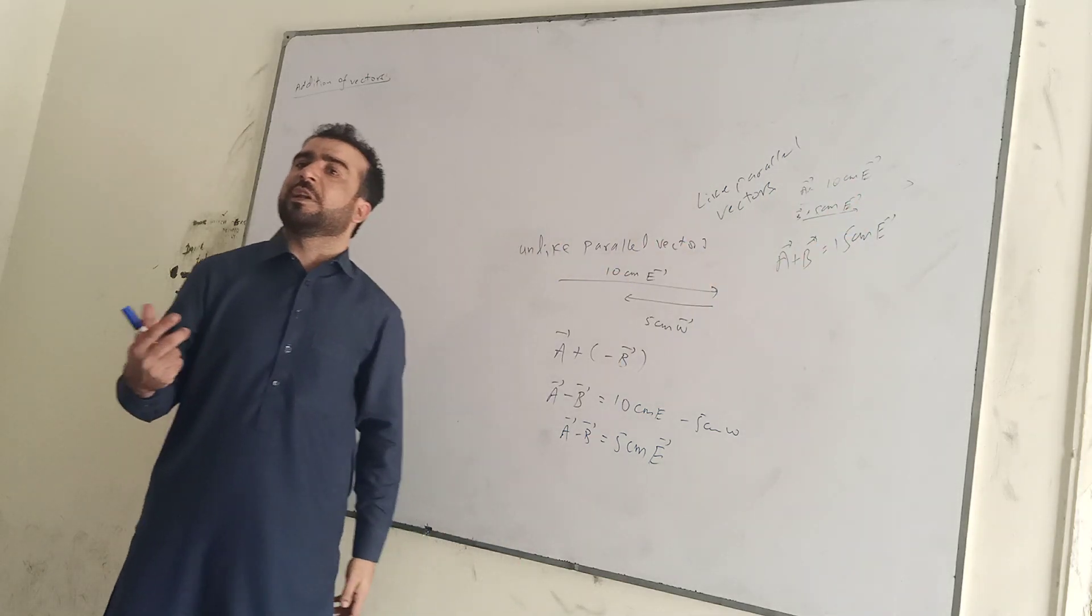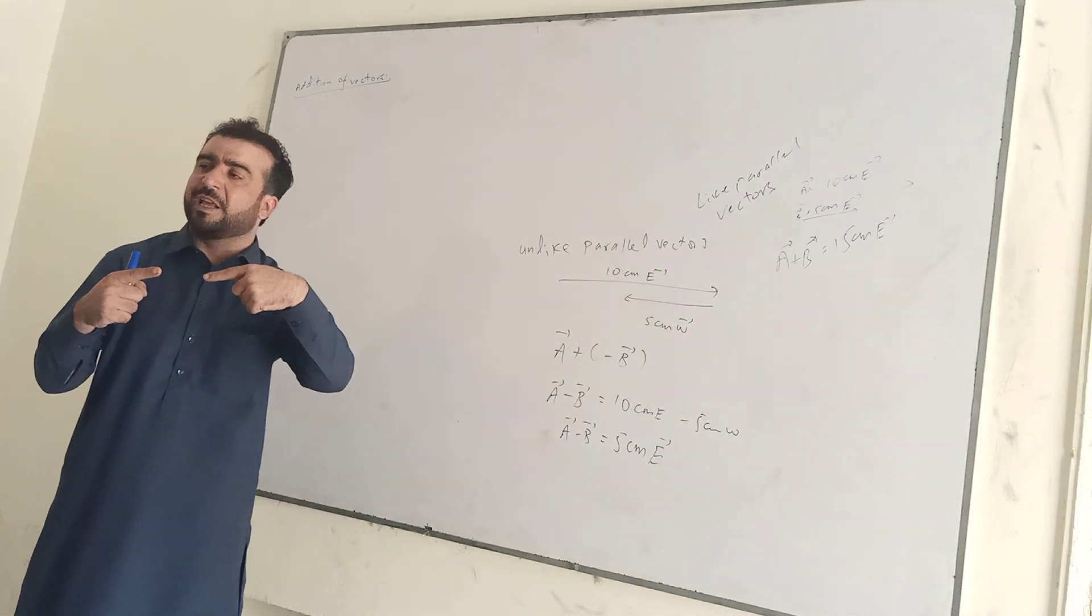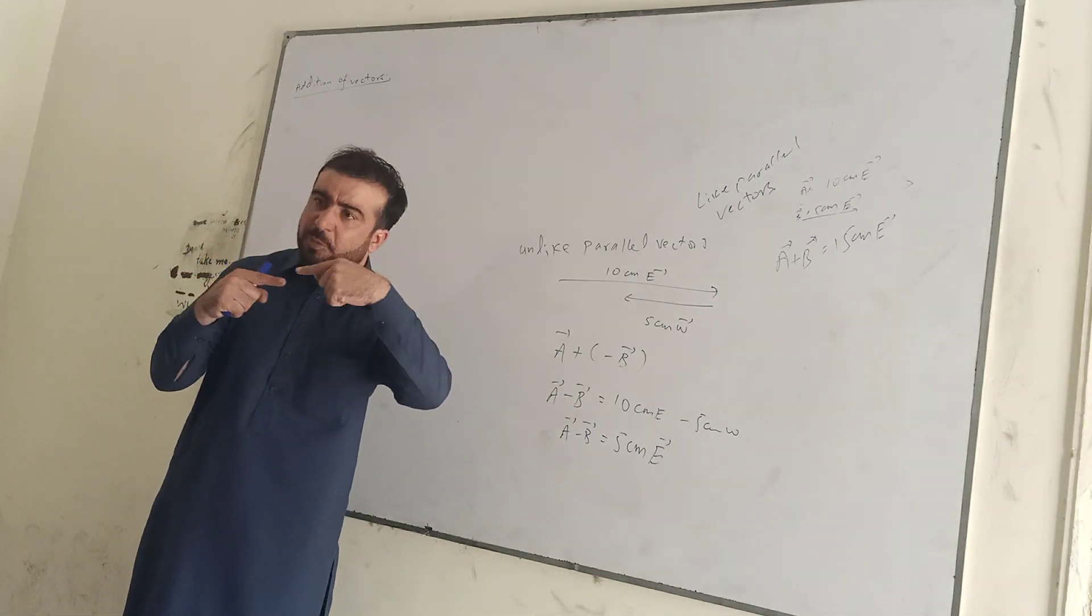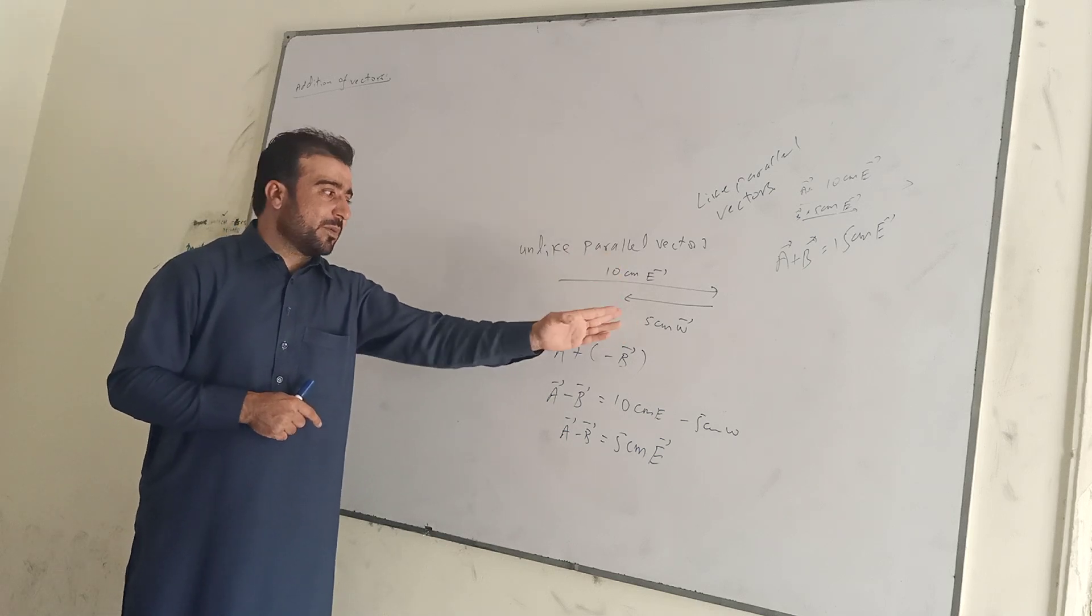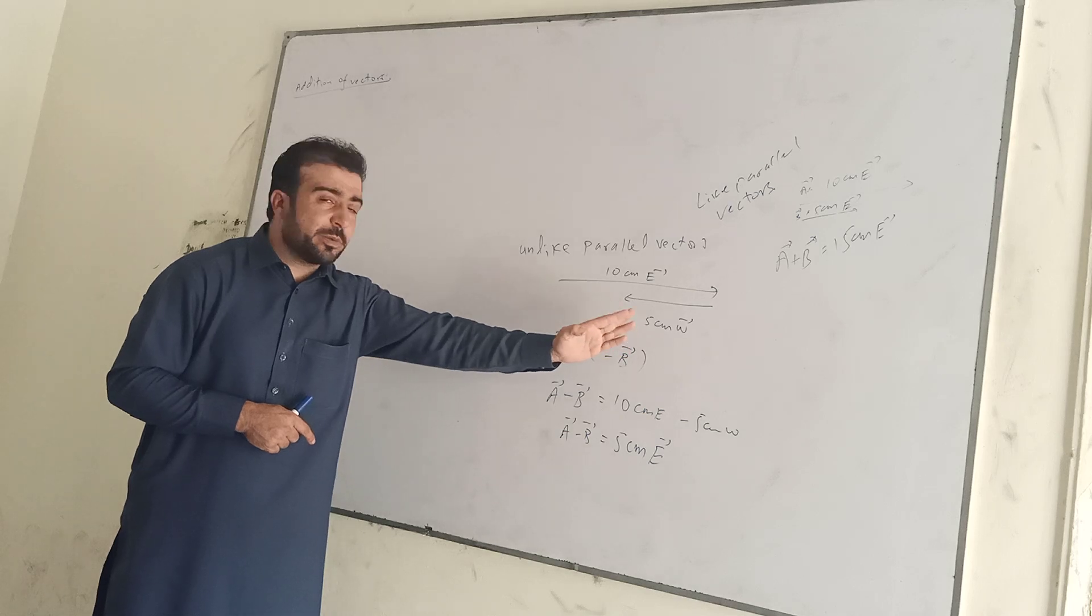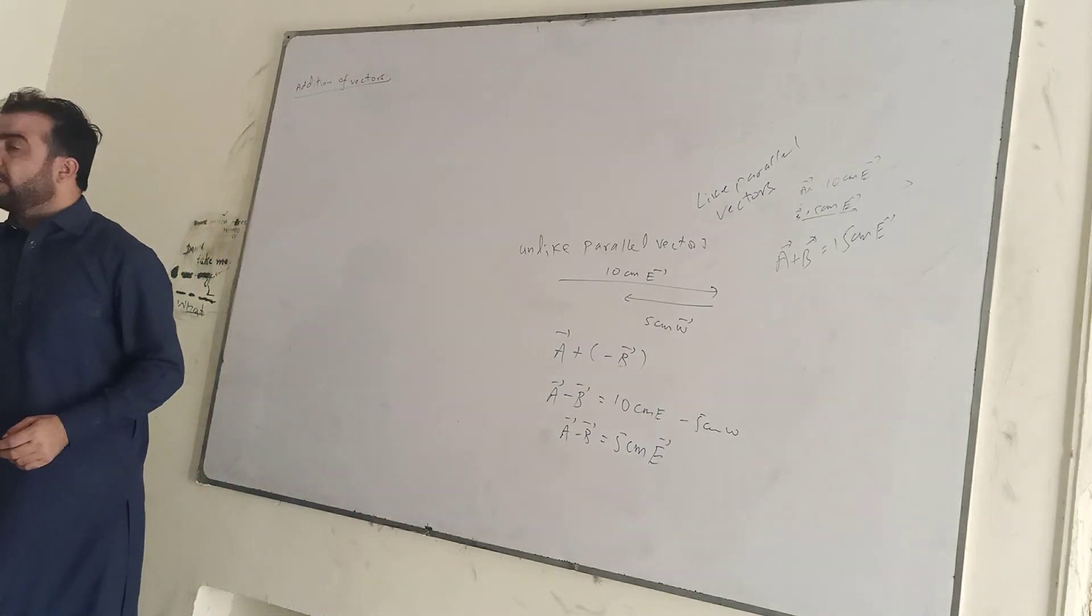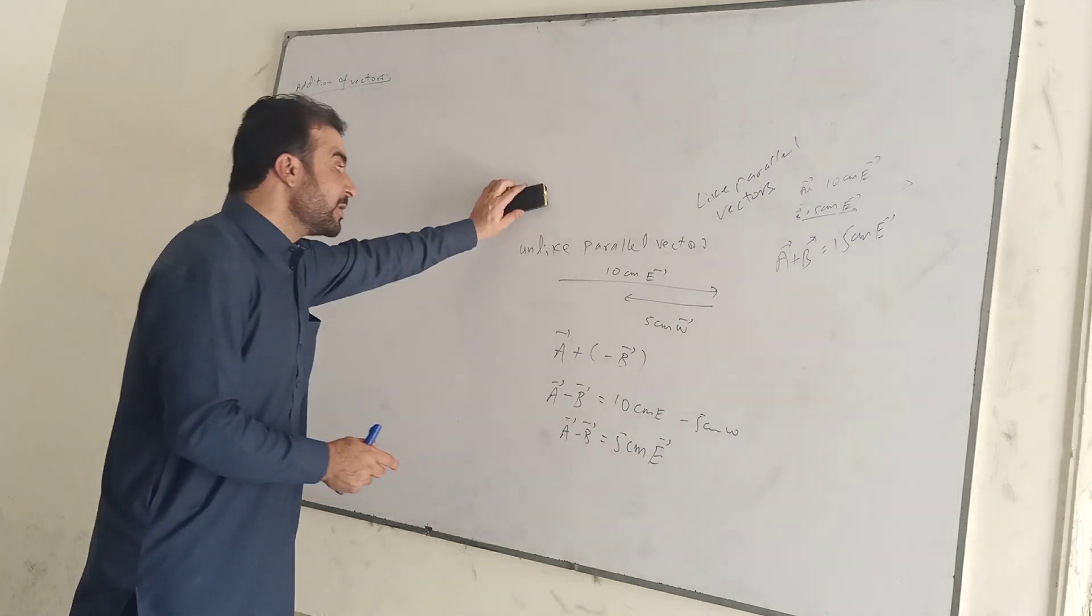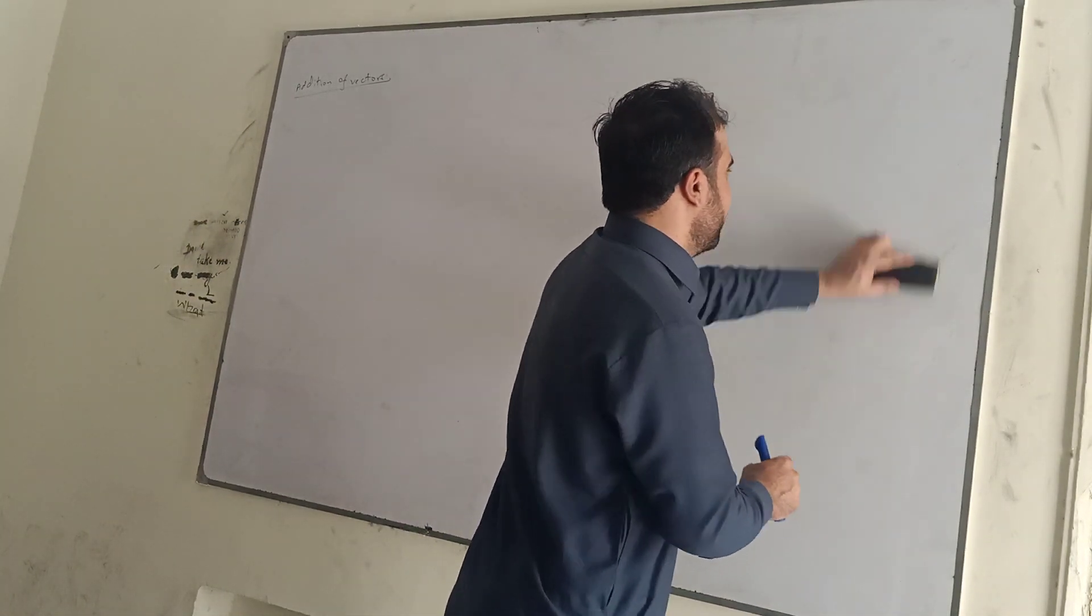The result of vector direction. Unlike vectors means opposite direction. Bigger minus smaller, and the resultant is in the direction of the bigger vector. Like and unlike parallel - we have a rule this time: head to head.